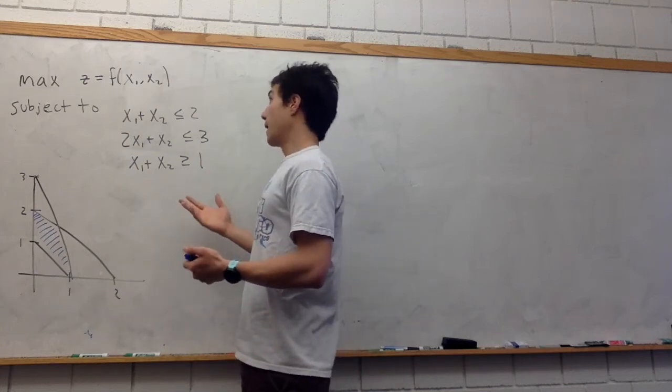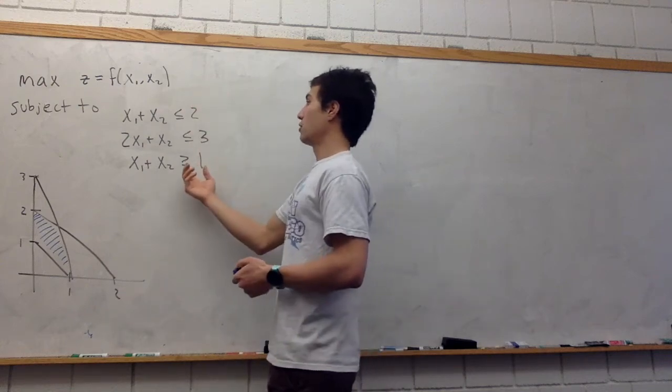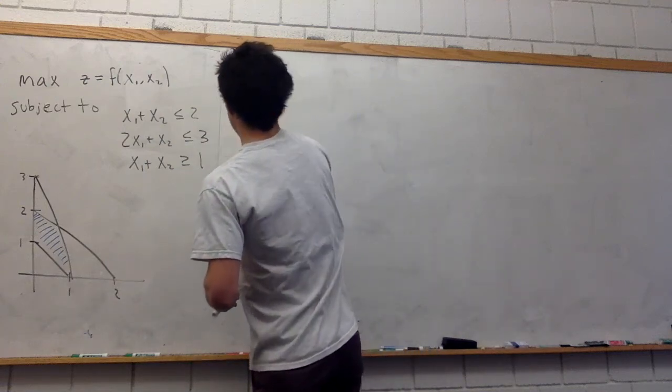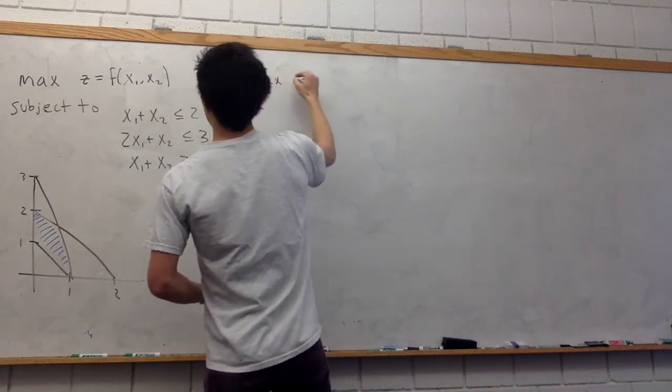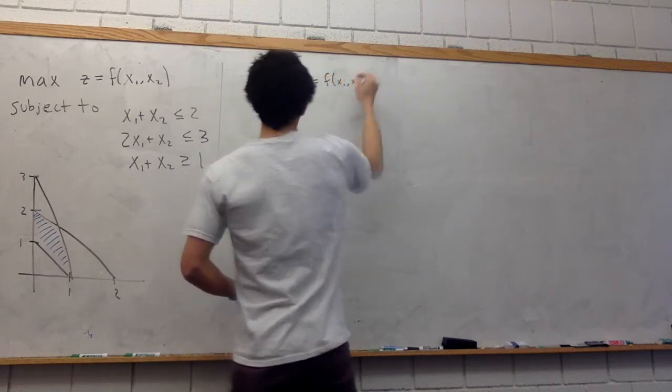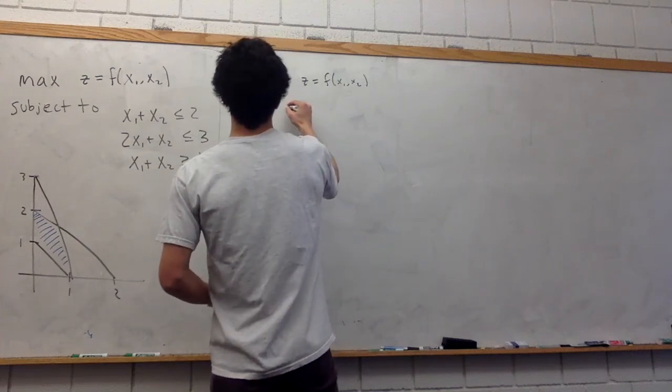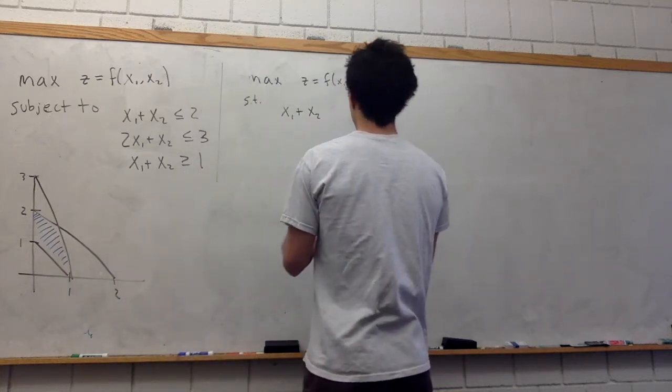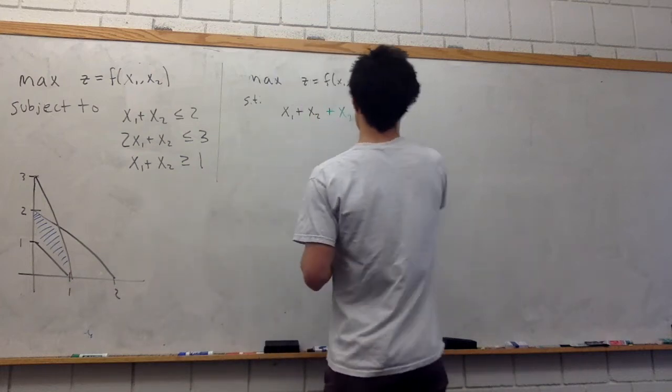So let's introduce our slack variables like normal and we'll see where we use the Big M method down here. To set up this problem so that we can run the simplex algorithm, we would introduce our slack variables. We want to maximize this same function z as f of x1, x2, subject to the constraints x1 plus x2, and now we'll add in this slack variable x3, is equal to 2.